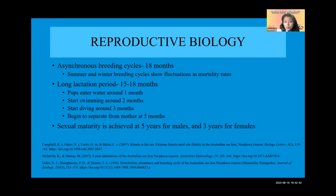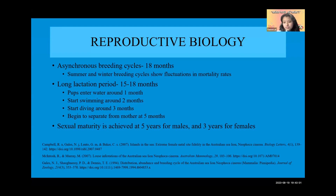Pups start swimming around two months and start diving around three months. At five months, they will start to move farther away from their mother, but they are reliant on their mother for food until they are fully weaned. Australian sea lions also reach sexual maturity at a relatively late age — five years for males and three years for females.